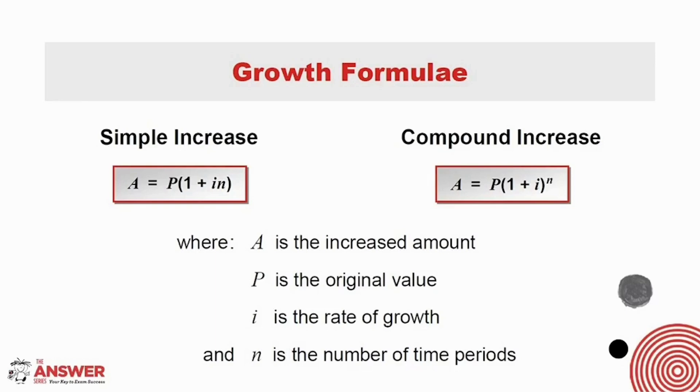All four variables appear in both formulae and represent the same things. The P represents the original value or amount and is often referred to as the principal value or the present value. A represents the increased value or amount after growth. Some examples of this could be the size of a population over time, the number of cells in bacteria over time, the value of an investment over time. The important concept to remember with a value of A is that it represents the value of an increased amount after a certain period. I is the rate of growth or the interest rate. And N is used to represent the number of time periods. And these could be days, hours, months, years, etc.